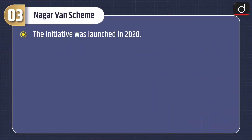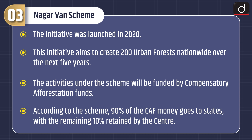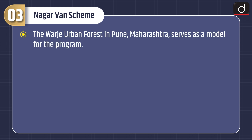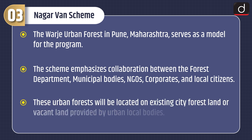The Nagar Van scheme was launched in 2020 and aims to create 200 urban forests nationwide over the next five years. Activities under the scheme are funded by Compensatory Afforestation funds. According to the scheme, 90 percent of the CAF money goes to states, with the remaining 10 percent retained by the center. The Varje Urban Forest in Pune, Maharashtra serves as a model for the program. The scheme emphasizes collaboration between the forest department, municipal bodies, NGOs, corporates, and local citizens. These urban forests will be located on existing city forest land or vacant land provided by urban local bodies.